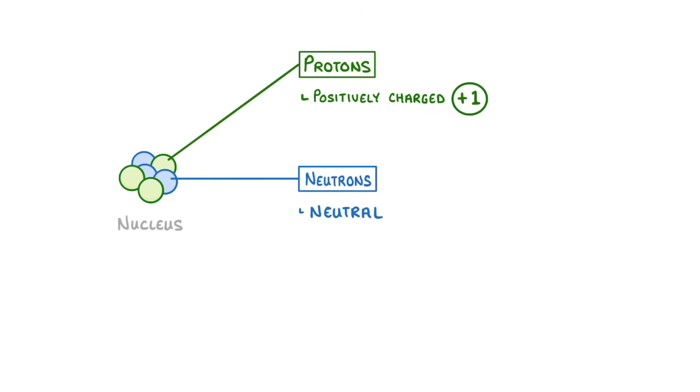In the centre of every atom is a nucleus, which contains individual protons and neutrons. The protons are positively charged, so one plus, while the neutrons are neutral. And we say that both of them have a relative mass of one.